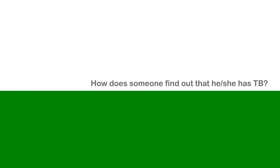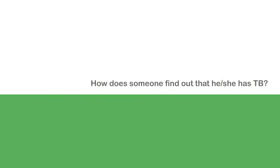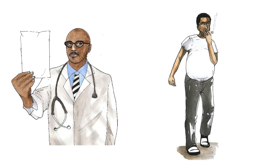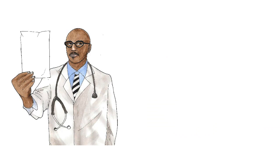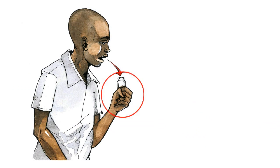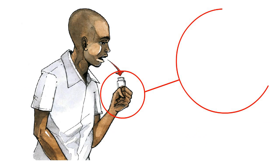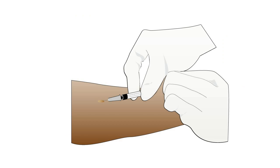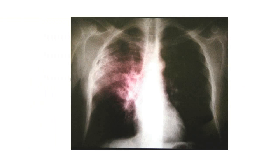How does someone find out that he or she has tuberculosis? You cannot know on your own. However, a qualified health worker performs a physical exam and takes a thorough health history of the infected person, including the symptoms.